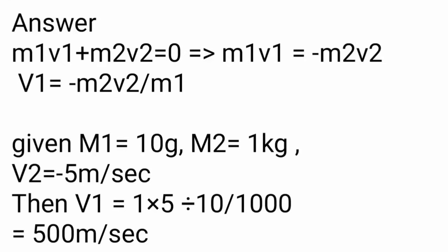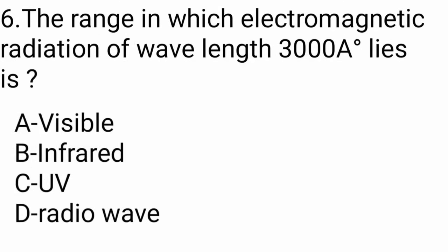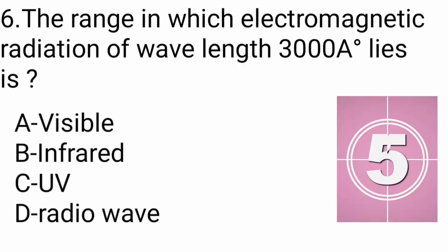Question number 6: The range in which electromagnetic radiation of wavelength 3000 Angstroms lies — options: visible, infrared region, UV region, or radioactive.